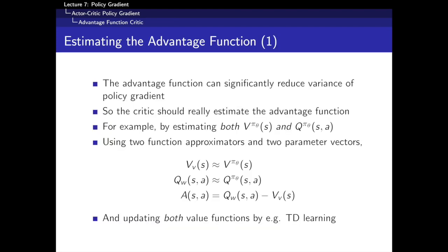So how do we estimate this advantage function in our critic? There are a lot of different ways. One approach is to learn both Q and V: the critic learns Q with one set of parameters and also learns V with another set of parameters, then we take the difference as our estimate of the advantage function. This is more complex — we have more parameters — but it gives us a literal estimate of the advantage function, which we then plug back into the policy gradient theorem: the difference between our state-action value function and our state value function.